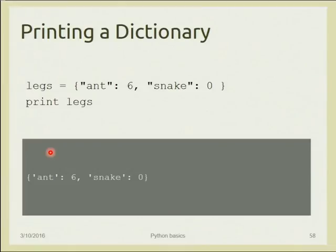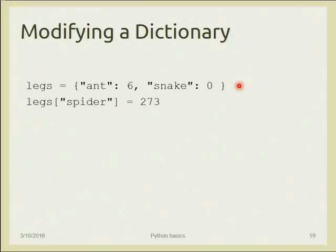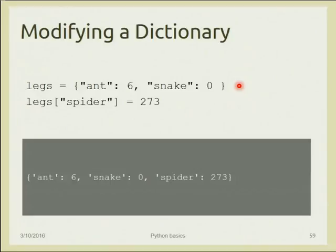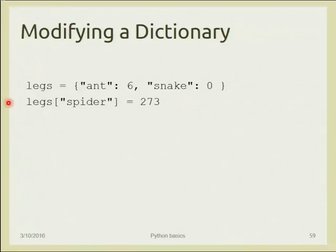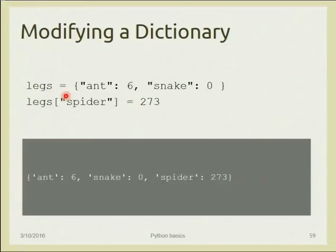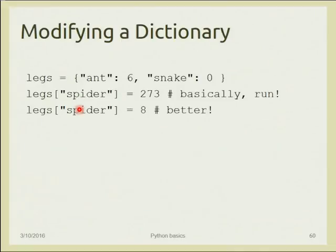For dictionaries, the print statement displays the dictionary as defined. To access a single element by its key, write 'legs["spider"] = 273' — this adds a new key-value pair. You can also add a new key and value to a dictionary in this way.